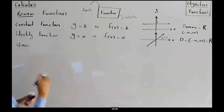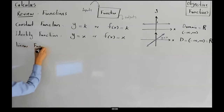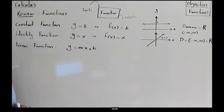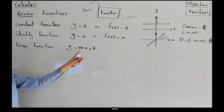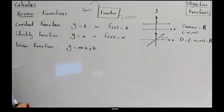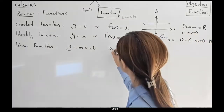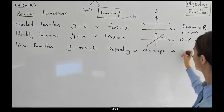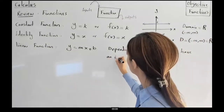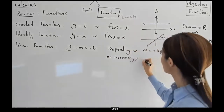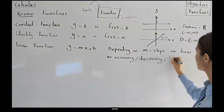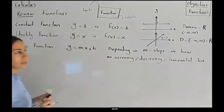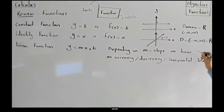Let's talk about the linear function. A linear function is represented by Y equals to MX plus B, or F of X equals to MX plus B. Depending on M, the slope, we get an increasing line, a decreasing line, or a horizontal line. In each case, the domain is negative infinity to positive infinity, or R.